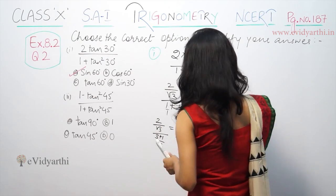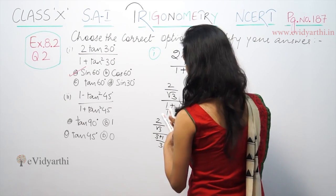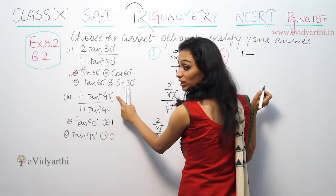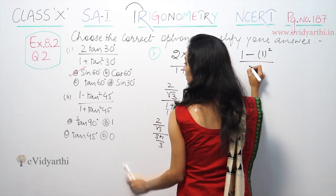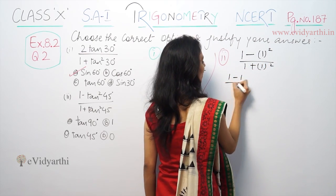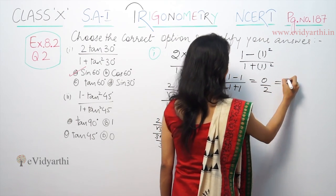Now second part: 1 minus tan squared 45 upon 1 plus tan squared 45. So 1 minus 1 upon 1 plus 1 means 0 by 2, that is 0.